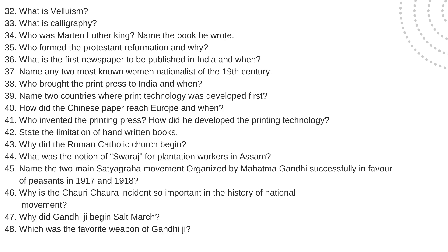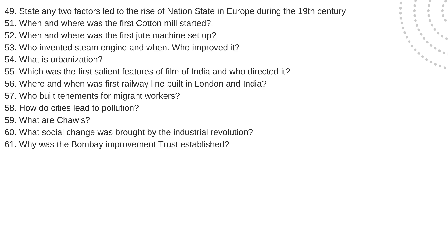Name the two main Satyagraha movements organized by Mahatma Gandhi in favor of peasants in 1917 and 1918. Why is the Chauri Chaura incident so important in the history of the national movement? Why did Gandhiji begin the Dandi March and which was the favorite weapon of Gandhiji? State any two factors that led to the rise of nation-states in Europe during the 19th century. What was Paul Brookdale famous for? When and where was the first cotton mill started? Who invented the steam engine and when? Who improved it? What is urbanization?